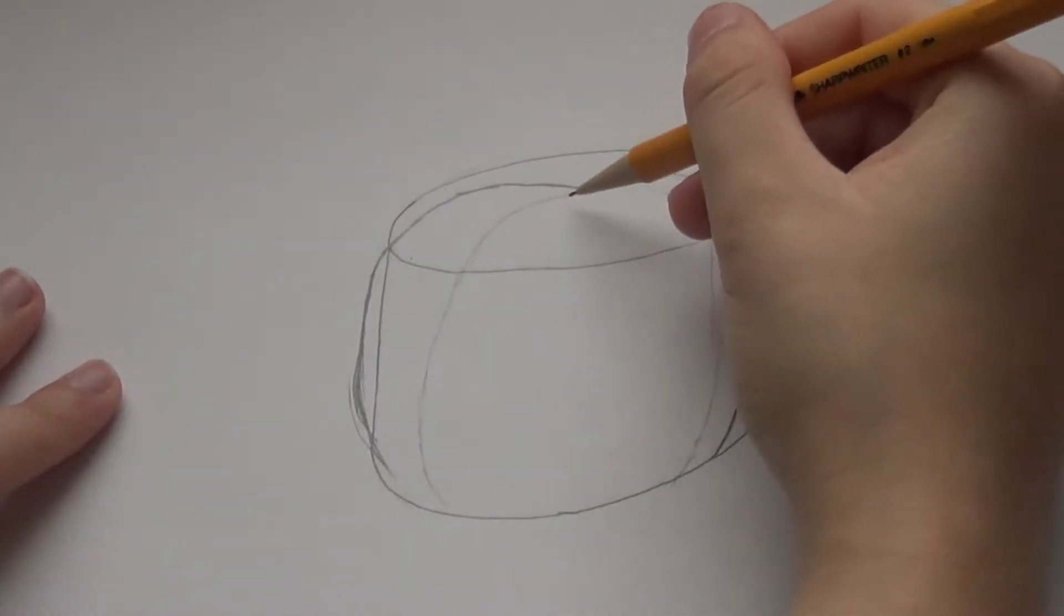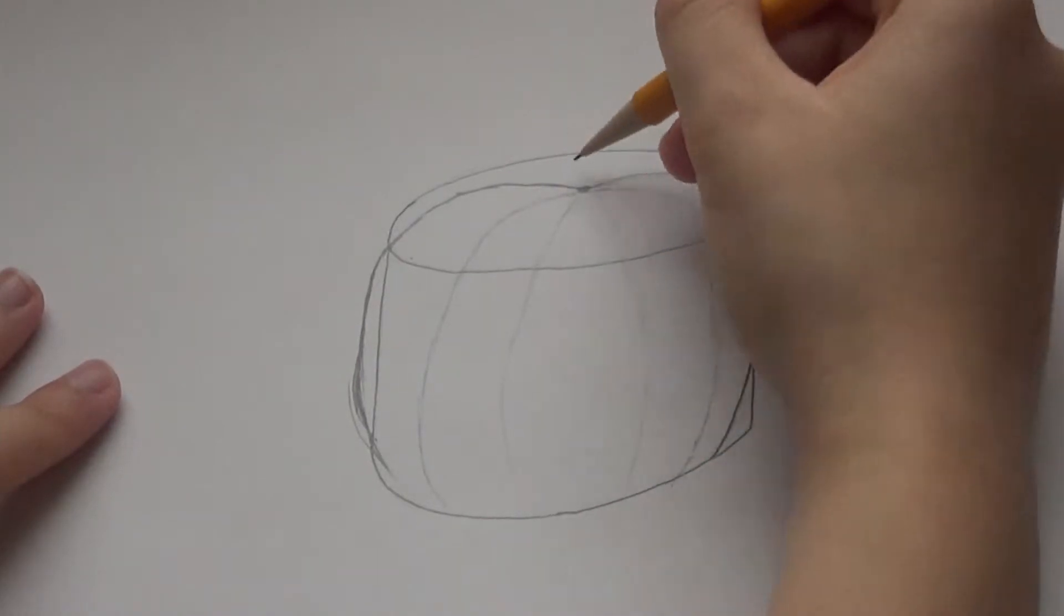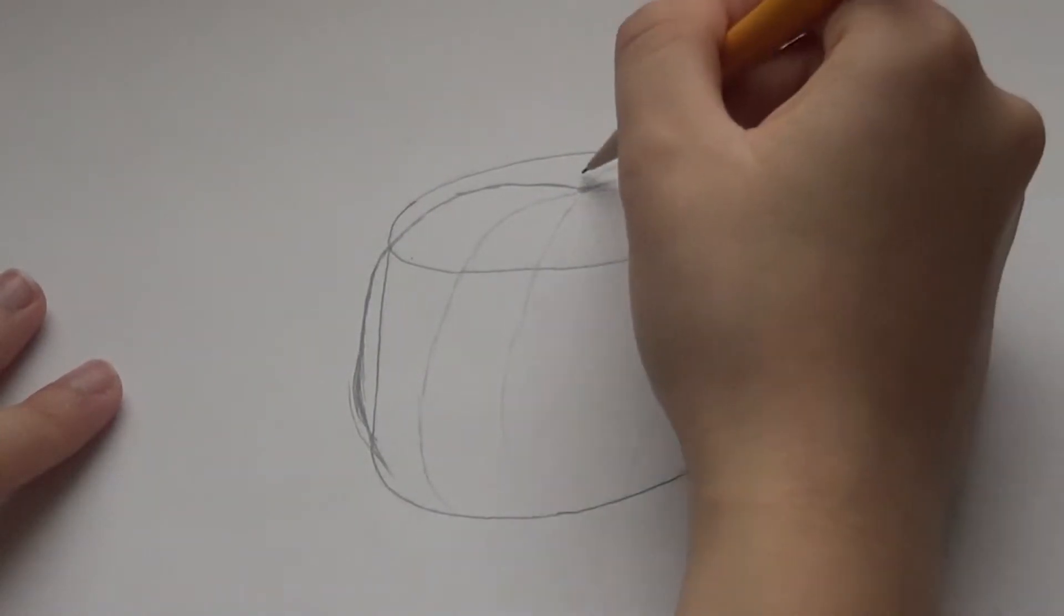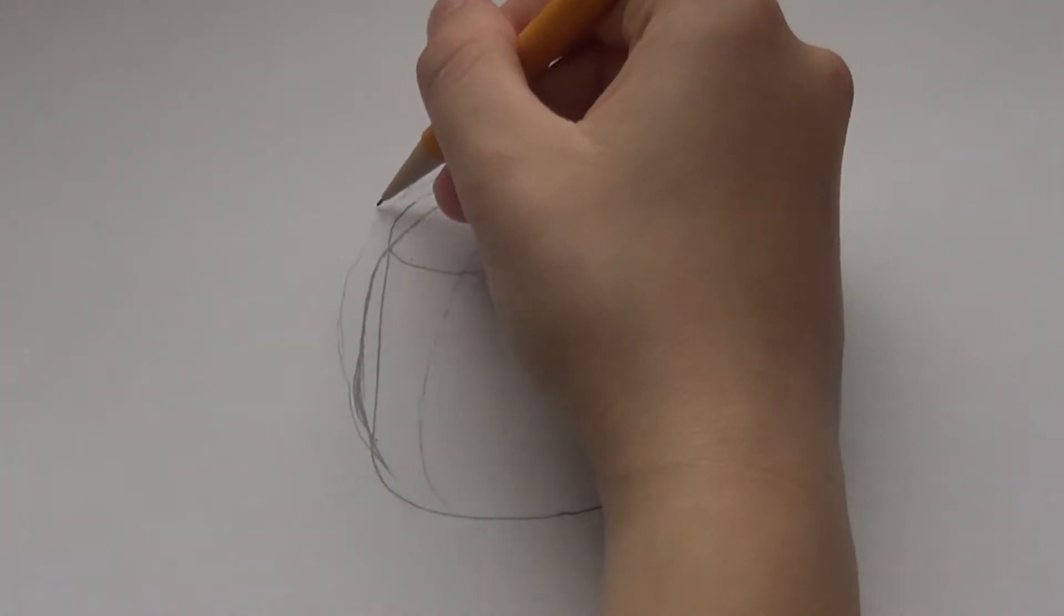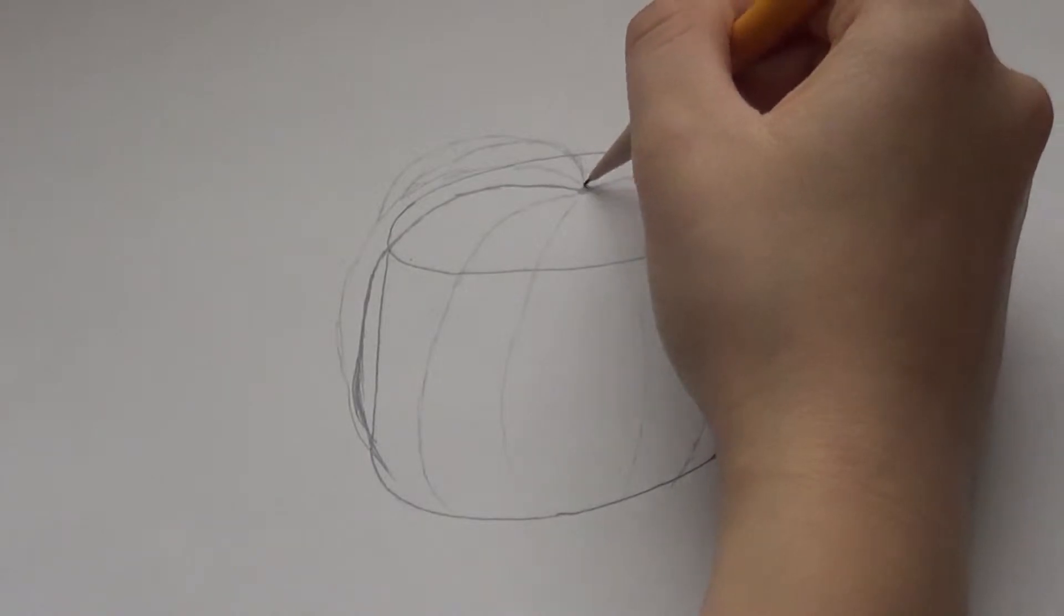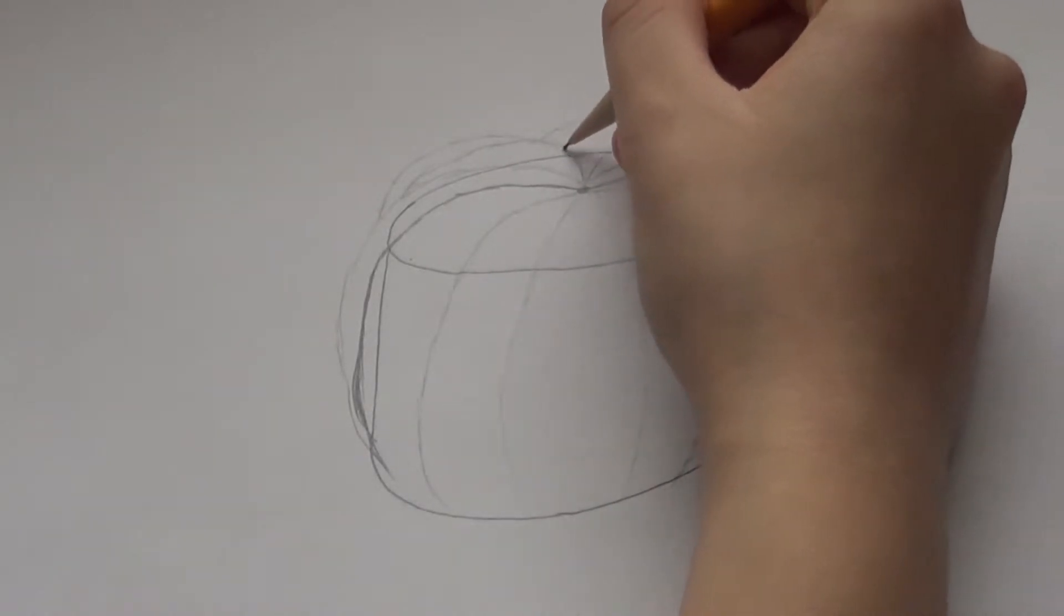And then when you get to the point where you can't draw lines to either side, just draw a line that connects them. The last line doesn't have to be touching that center dot, it just has to touch both of the sides to close in the shape we've made.